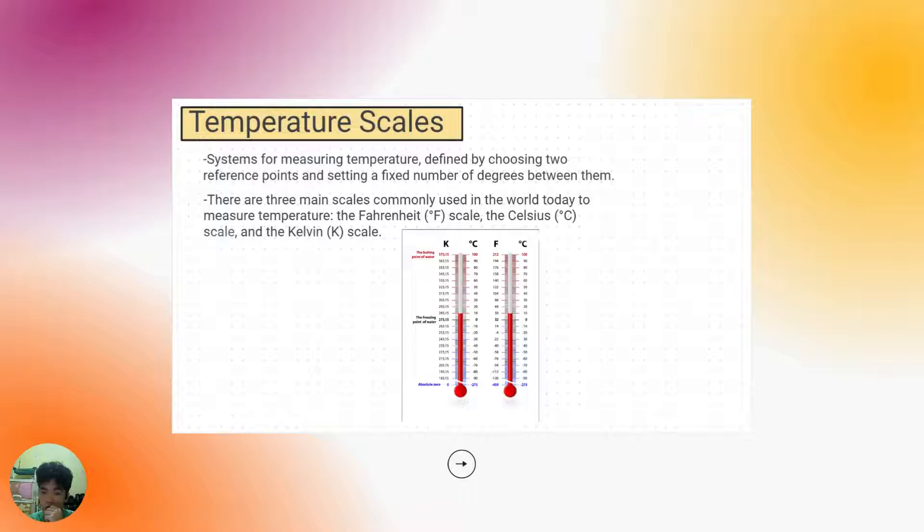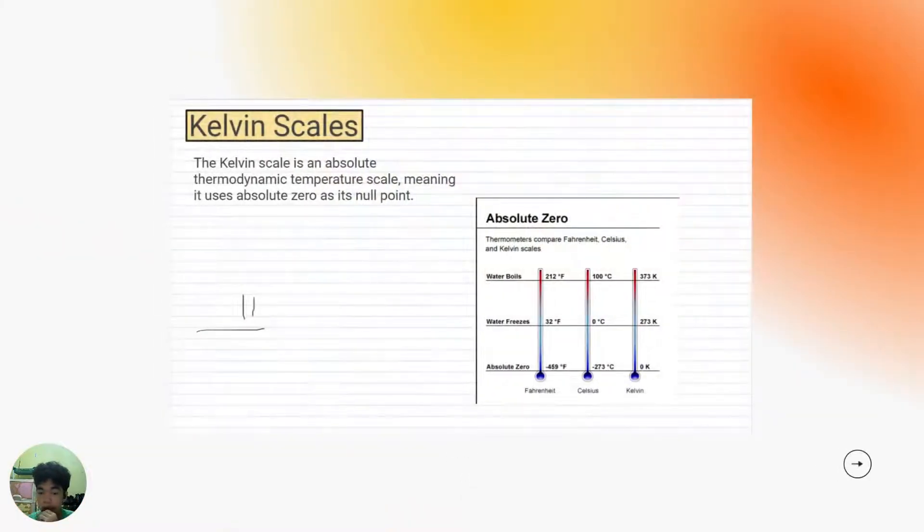Temperature scales are systems for measuring temperature, defined by choosing two reference points and setting a fixed number of degrees between them. There are three main scales commonly used in the world today to measure temperature: Fahrenheit, Celsius, and Kelvin. The Kelvin scale is an absolute thermodynamic temperature scale, meaning it uses zero as its null point.